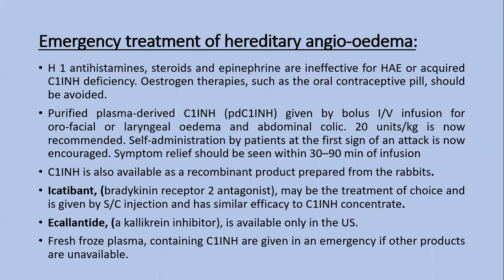Other therapies include icatibant, a bradykinin receptor 2 antagonist, which may be the treatment of choice given as a subcutaneous injection and has similar efficacy to C1 inhibitor concentrate. Ecallantide is a kallikrein inhibitor available only in the US. Fresh frozen plasma (FFP) containing C1 inhibitor is given in emergencies if other products are unavailable.